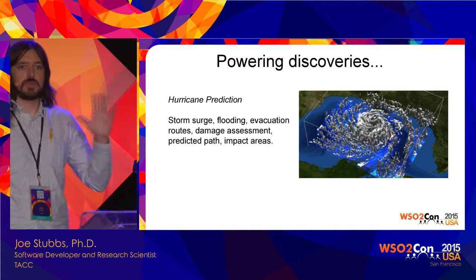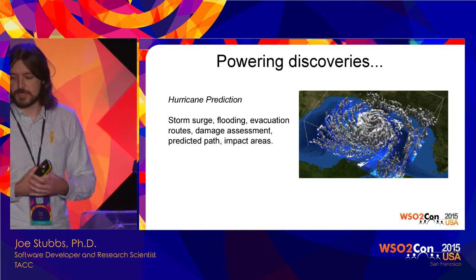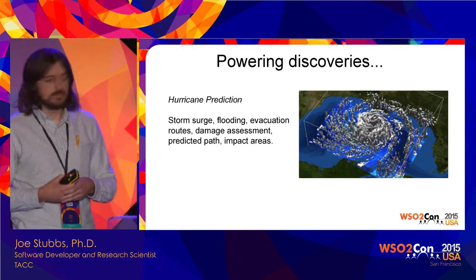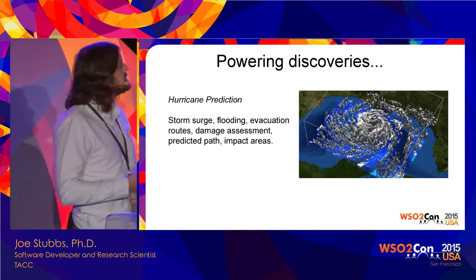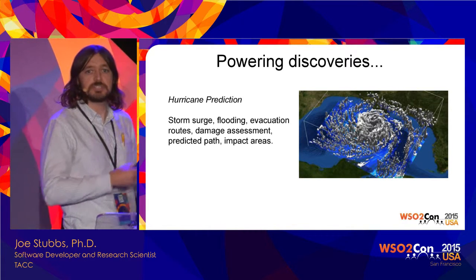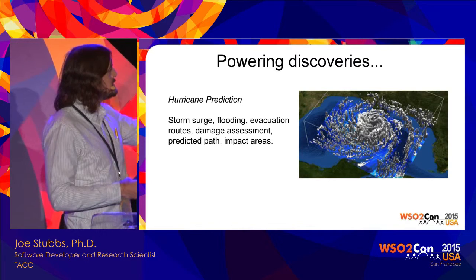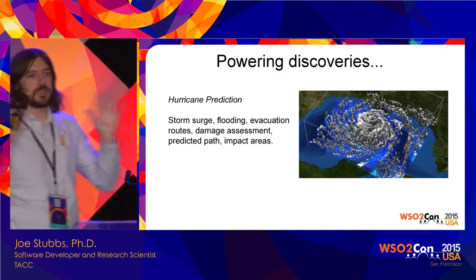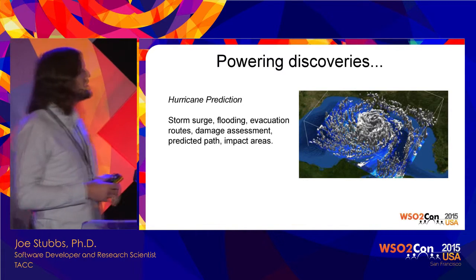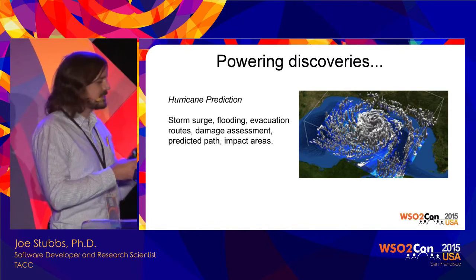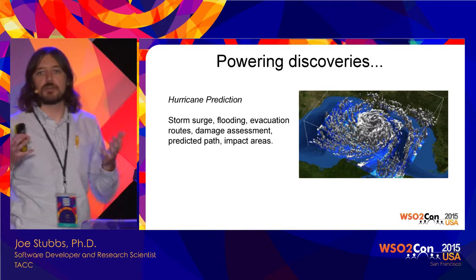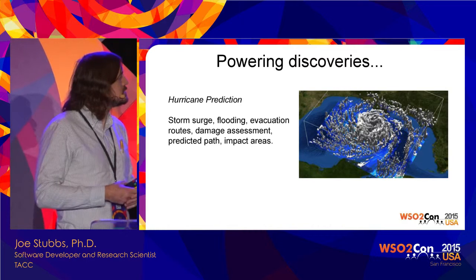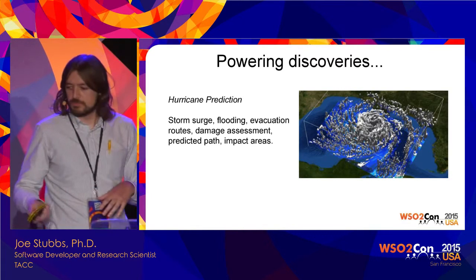We've branched way out beyond astronomy. We do a lot of weather prediction — hurricane prediction. This is an image from a study done by weather modelers at Penn State, using radar collected from within the core of the storm to basically reduce prediction error rates by about 25%. This was a 2015 study done with researchers at Penn State.